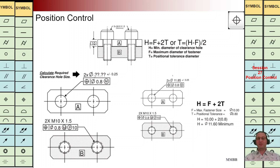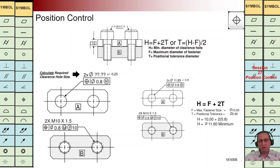Hello everybody, glad to see you today. We're going to talk about fasteners. In this example we have two parts A and B. It is a fixed fastener and we are going to use M10. We need to find what should be the hole diameter for part A.